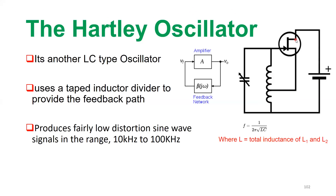There is a DC power supply connected to the drain pin of the transistor. The gate pin receives input from the feedback network, and the output is fed back to the feedback network from the source pin. In block diagram form, the first block is the amplifier unit — the transistor — and the feedback network is the combination of tapped inductor and capacitor. The output of the amplifier is given to the feedback network, and the output of the feedback network comes back to the gate pin of the FET as input.